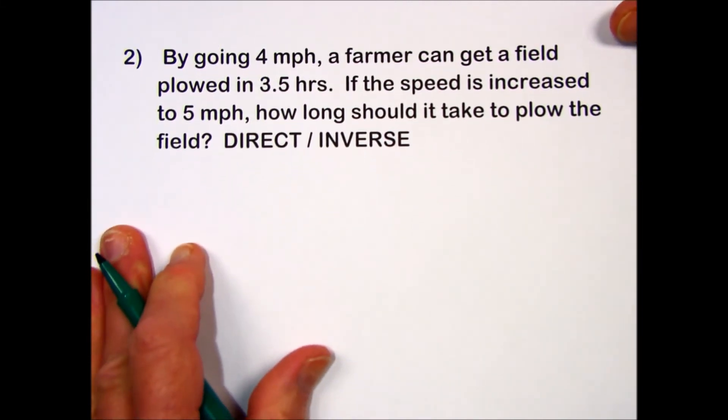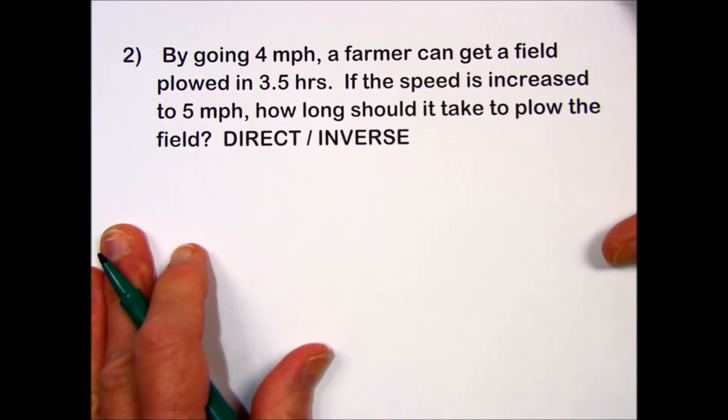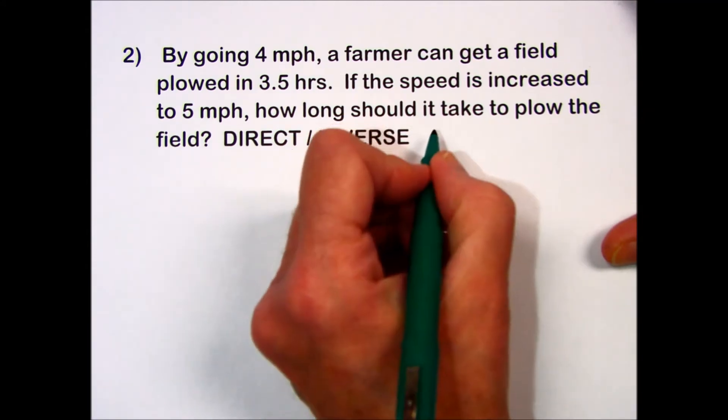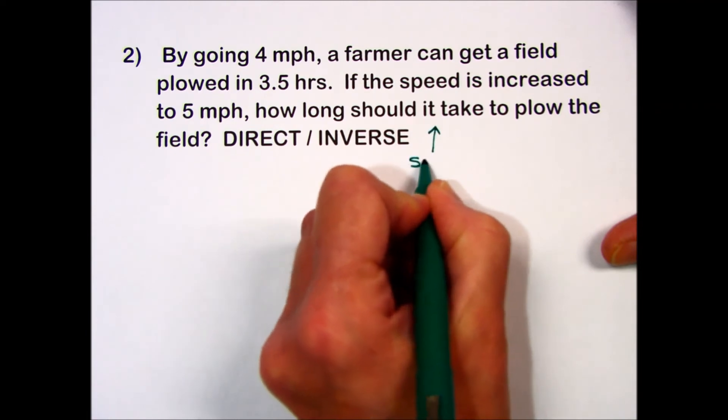In problem number two, it says by going 4 miles per hour, a farmer can get a field plowed in 3.5 hours. If the speed is increased to 5 miles per hour, how long should it take to plow the field? We're talking about an increase in speed.